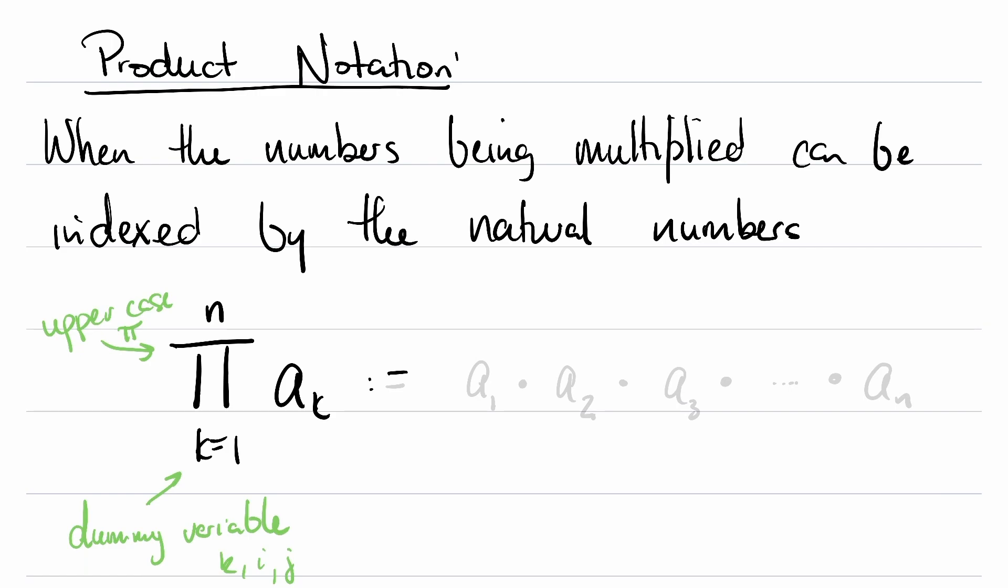And here's what this means. This means a sub 1, whatever that might be, times a sub 2, whatever that might be, times a sub 3, times all the way up to a sub n. This is the product of a sub 1 up through a sub n.